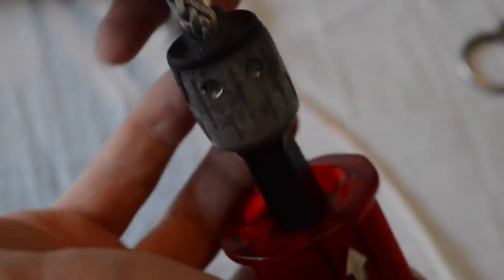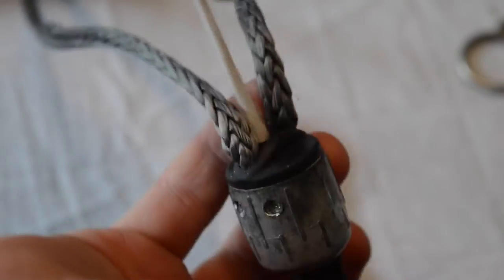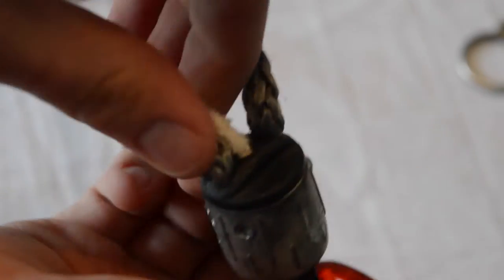Once you've done that, you can pull the safety line through the center of the chicken loop from the top of the chicken loop. Sometimes it's a little bit difficult to pull it through, but it will come through eventually.